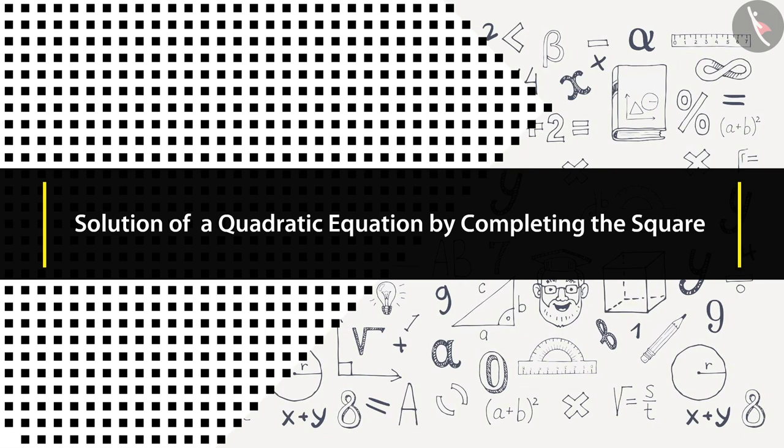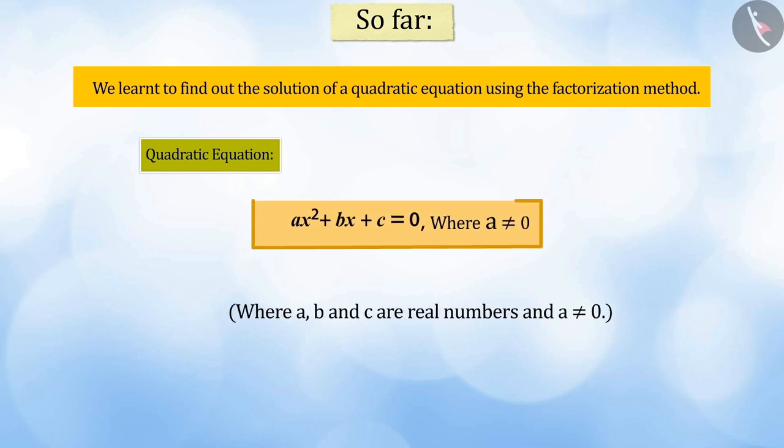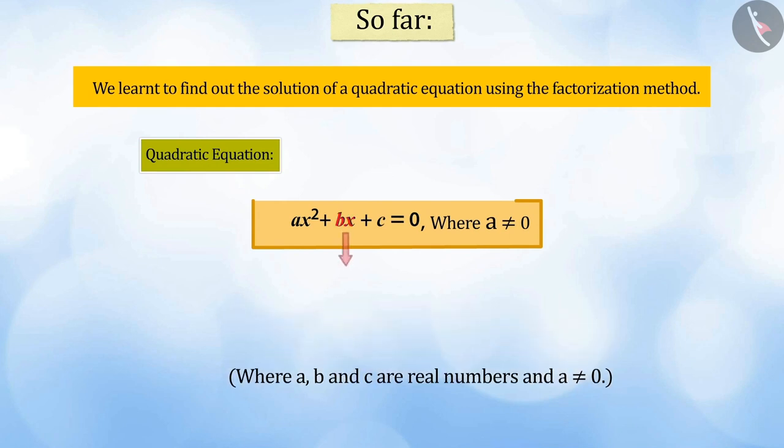Hello everyone. Welcome to this video. In our previous video, we learnt to find out the solution of a quadratic equation using the factorization method, in which the middle term is in the form of bx, coefficient b of x is equal to the sum of two factors and the product of a and c.